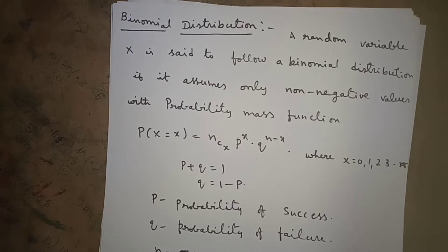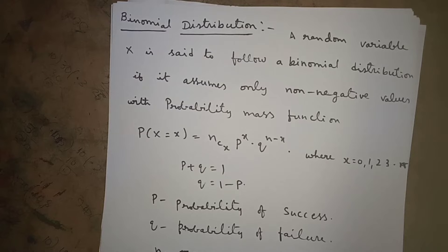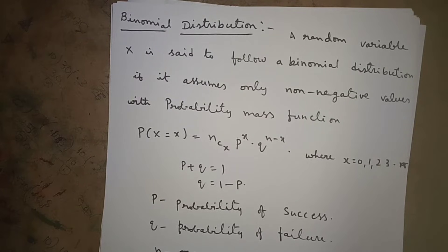Now, today I am starting binomial distribution. This binomial distribution comes under discrete probability distribution. Why? Because here X assumes only countably finite number of values.